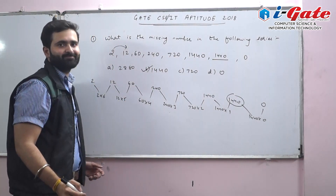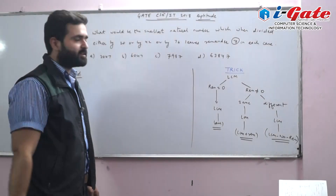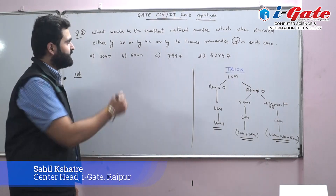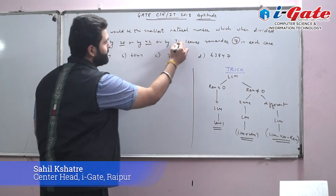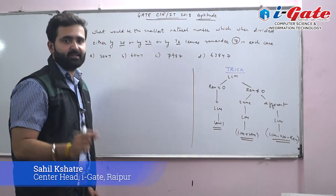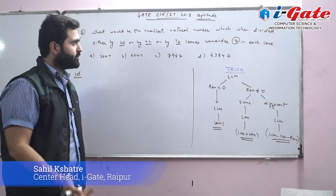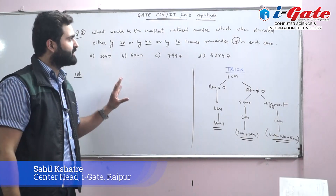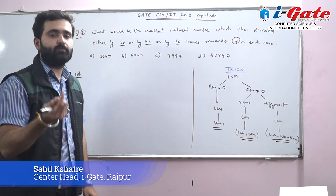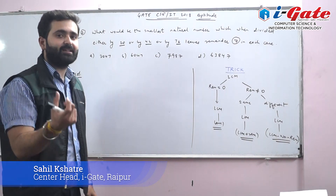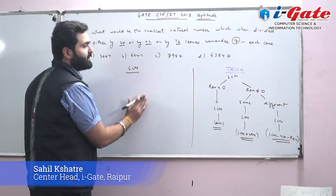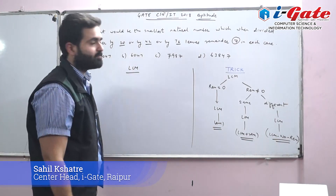Question 2: What is the smallest natural number which when divided by 20, 42, or 76 leaves remainder 7 in each case? When this type of problem arises — finding the smallest natural number with a given remainder — the approach is to find the LCM of the given numbers first.